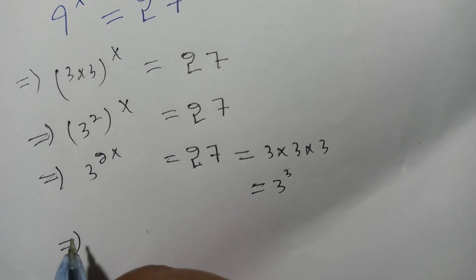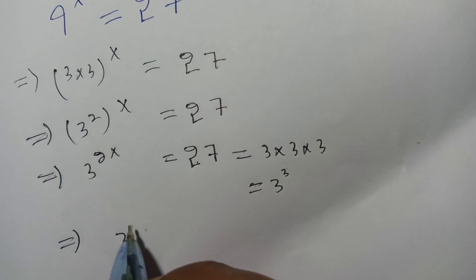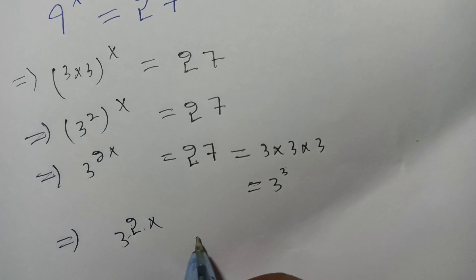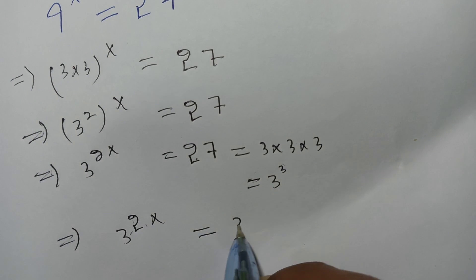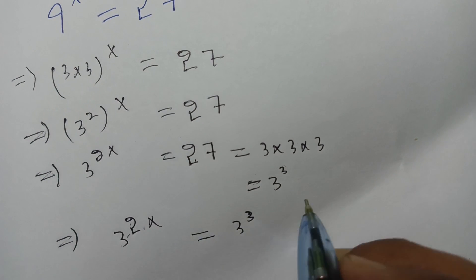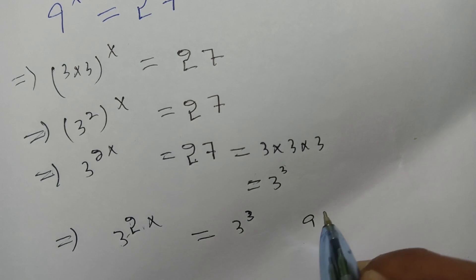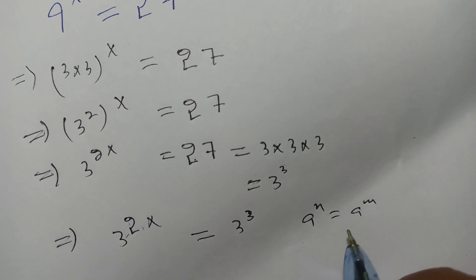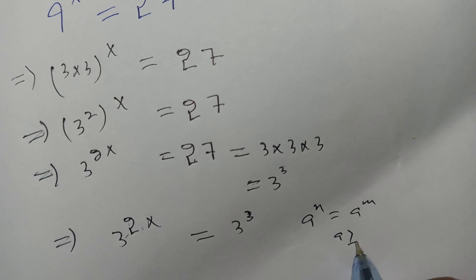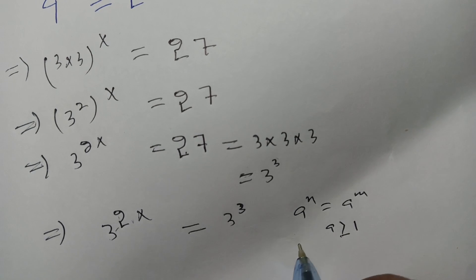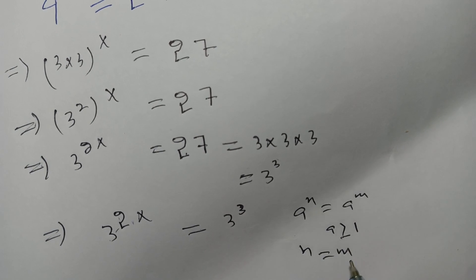We have on our left-hand side 3 to the power 2x. On our right-hand side 3 to the power 3. We know that if a to the power n is equal to a to the power m and a is greater than or equal to 1, we can compare its powers, means that n is equal to m.